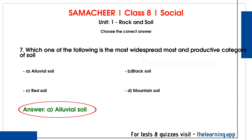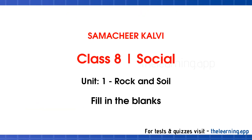Alluvial soil is deposited by rivers. The soil is carried by rivers and deposited near the sea. Alluvial soil is mineral-rich and very fertile soil, making it the most productive category of soil.